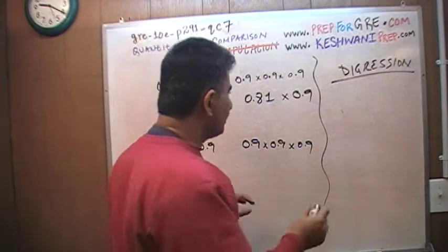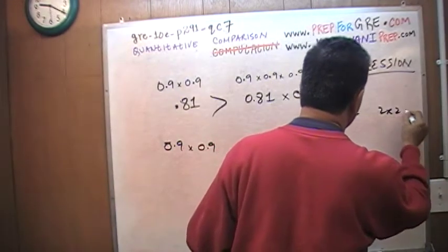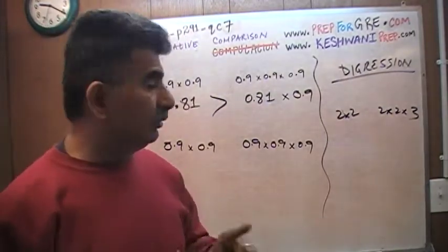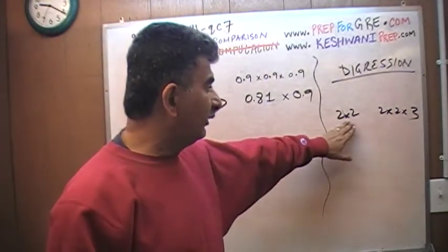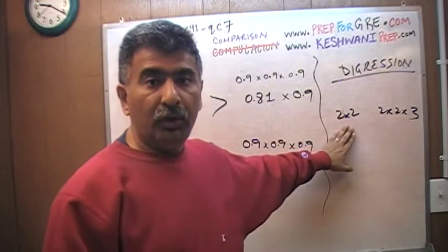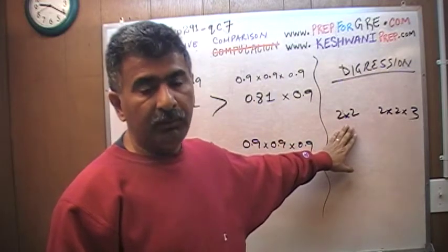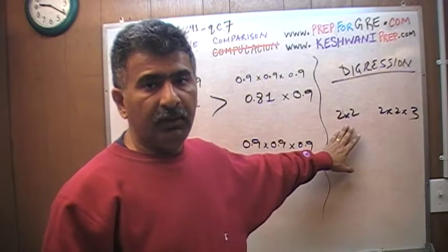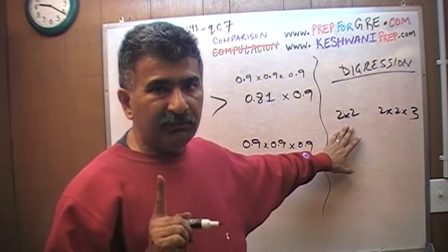Let's digress for a second. If I ask you which quantity is bigger, 2 times 2 or 2 times 2 times 3, you could, if you wanted to, sit there and tell me that this is 4 and this is 12 and therefore 12 is more than 4. You could do all of that if you wanted to, but if you did that, as I have told you many times before if you watched my previous clips, if you did all of that, you would be missing a bloody point.